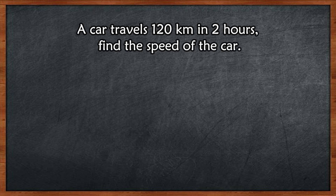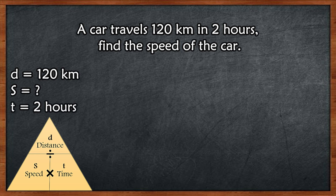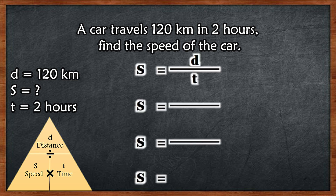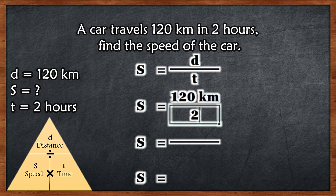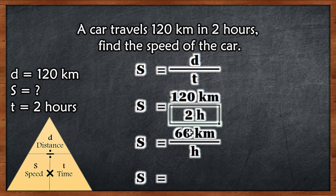Next example: A car travels 120 kilometers in 2 hours. Find the speed of the car. Distance is equal to 120 kilometers, speed is missing, and time is 2 hours. Our formula is speed equals distance divided by time: 120 kilometers over 2 hours equals 60 kilometers per hour. So the speed is equal to 60 kilometers per hour.